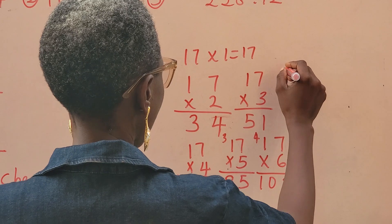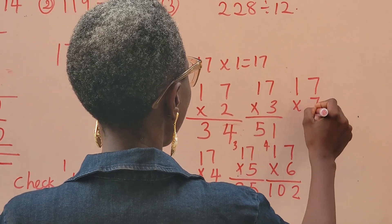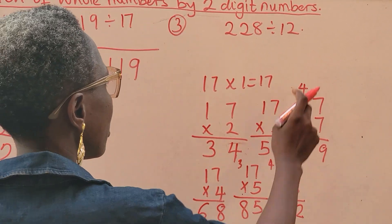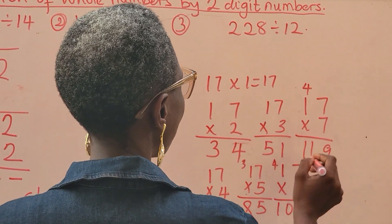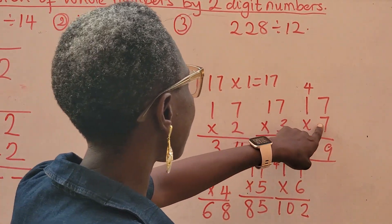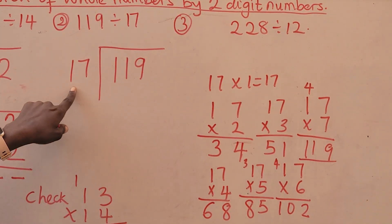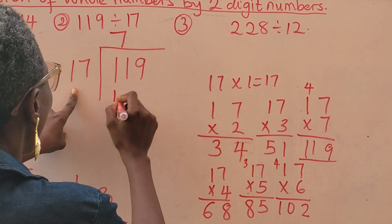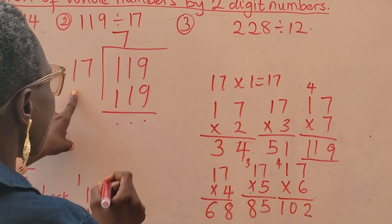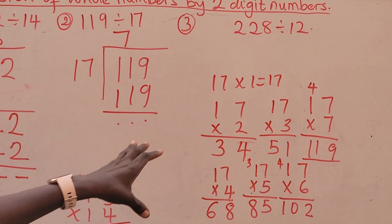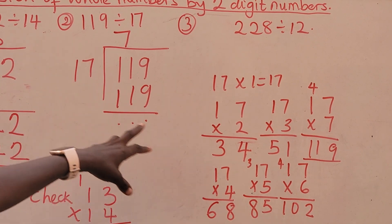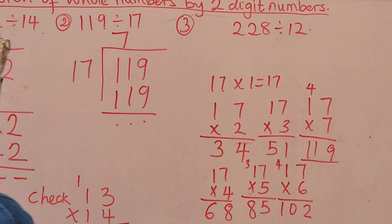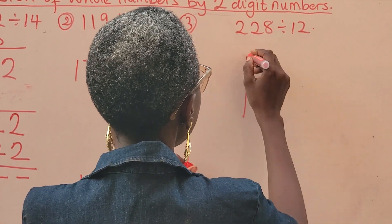So I can still move one more time. 17 times 7. 7 times 7 is 49. 7 times 1 is 7. Plus 4. That's 119. You can see. That means 17 times 7 is 119. 119 divided by 17 is 7. 17 times 7 is 119. When you have it this way, just go ahead and do your multiplication table. By the time you do it, you will get a number that is either close or exactly it. And then you will get your final answer. So we go to the next one.